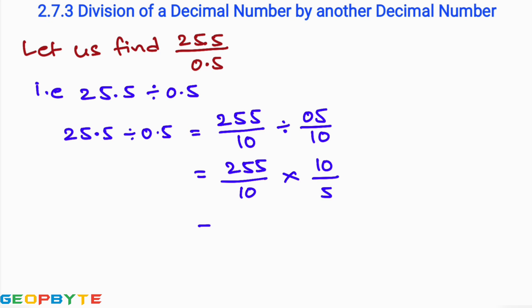That gives us 255 by 10 into 10 by 5. The 10s cancel, leaving 255 by 5. Since 5 ones are 5 and 51 fives are 255, we get 51. So the result of 25.5 divided by 0.5 is 51.